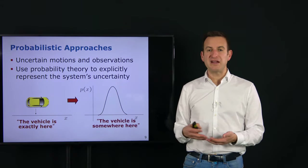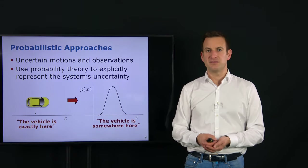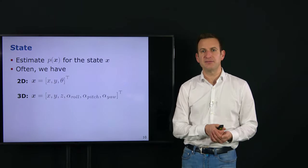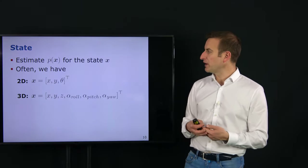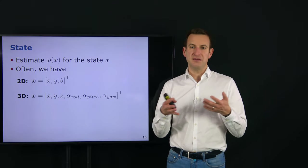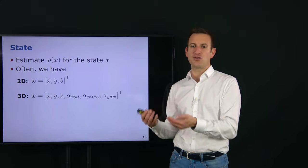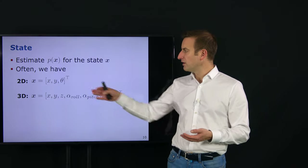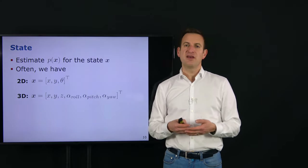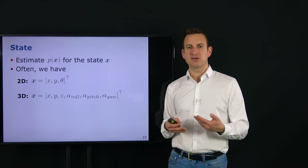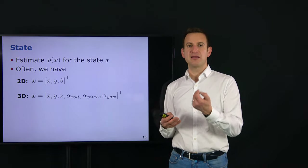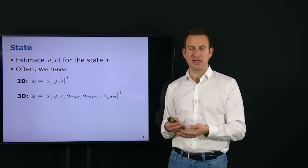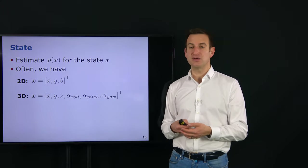We are performing probabilistic state estimation. In localization, we often need to estimate the position of the platform and its heading — where is it looking? In a 2D world, we typically have a three-dimensional vector describing an X, Y location and a 1D heading, describing in which direction the platform is looking. So we have three variables to estimate.